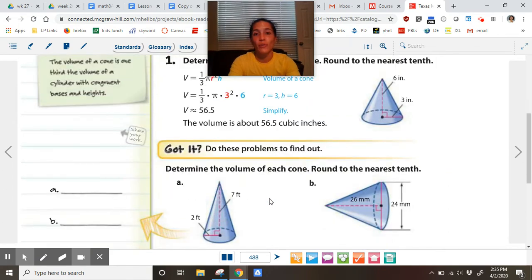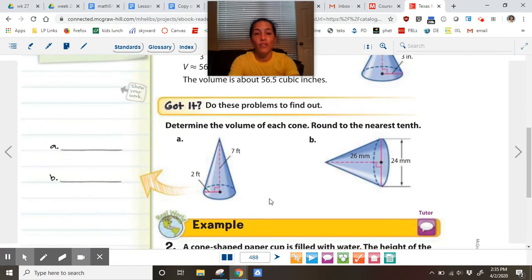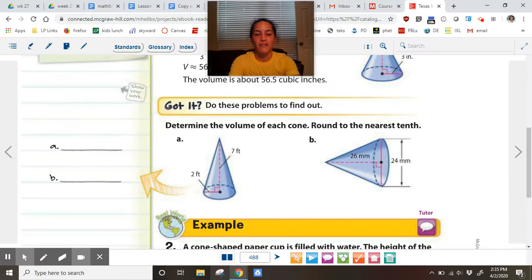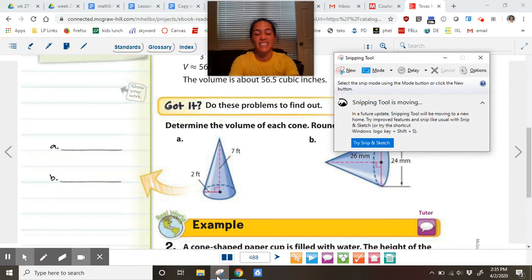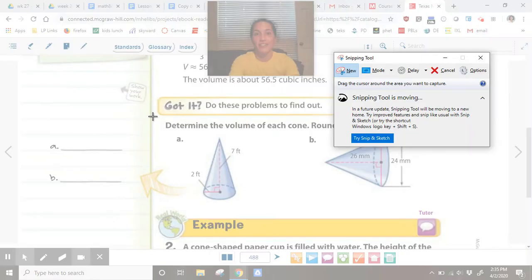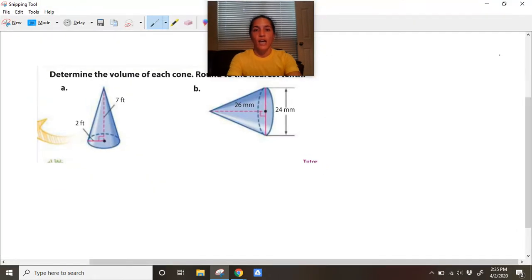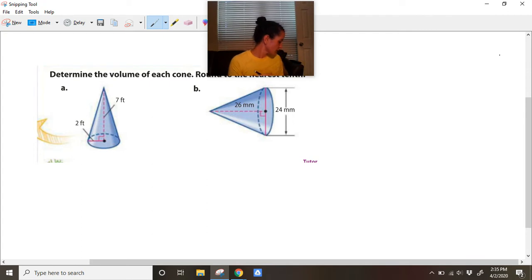There's an explanation right there for you. There are some examples - these examples are done for you. I'm not going to sit here and read them to you, but I'm going to do these two examples with you. Let's see, the directions say determine the volume of each cone, round to the nearest tenth.